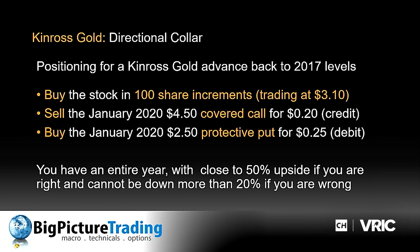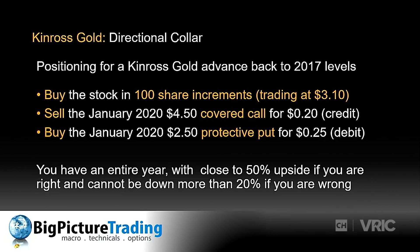Third: a directional collar on Kinross. Buy shares of Kinross in 100-share increments. Go out a year and sell a $4.50 covered call — Kinross is just over $3 right now — generating 20 cents income, giving yourself almost 50% upside. Use that premium to buy a protective put at $2.50, limiting downside risk to 20%. You build a scenario with 50% upside but only 20% downside risk — a beautiful asymmetric payoff that gives you staying power without getting stopped out on short-term swings.